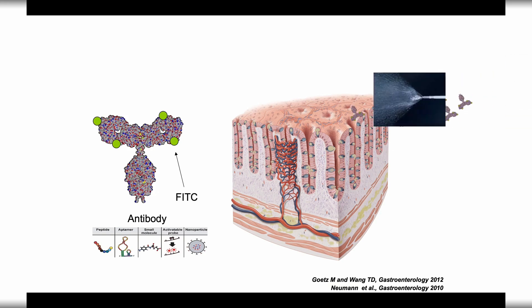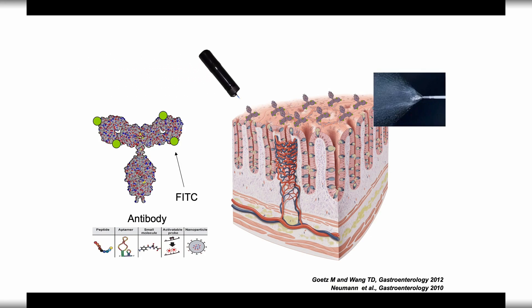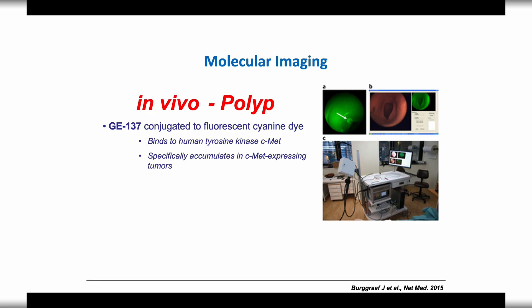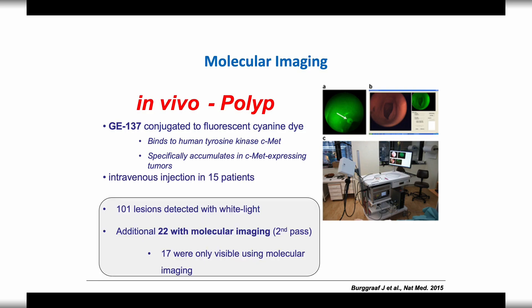So by injecting the antibodies and then applying the endoscope to the mucosa, you are doing molecular imaging. It's something that cannot still be applied in general practice, but it might have potential use in the future if the method of creating the antibodies becomes much cheaper.